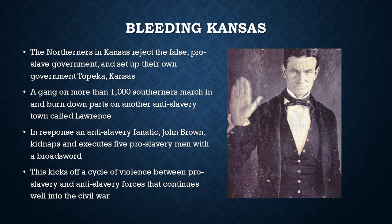So it looked like there was going to be a little mini civil war between northerners and southerners in Kansas — and this actually turned out to be the case, especially when John Brown, an anti-slavery fanatic, began kidnapping and executing pro-slave people with a broadsword, literally hacking them to pieces. John Brown kicked off a cycle of violence between pro-slave and anti-slavery people in Kansas, and this violence continued well into the Civil War. By 1856, Kansas had already fallen into violence between the North and the South.